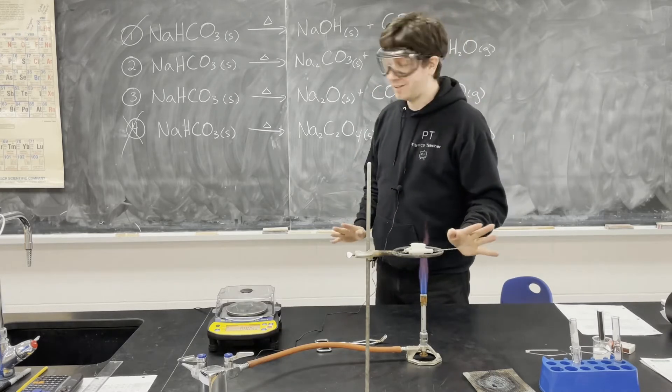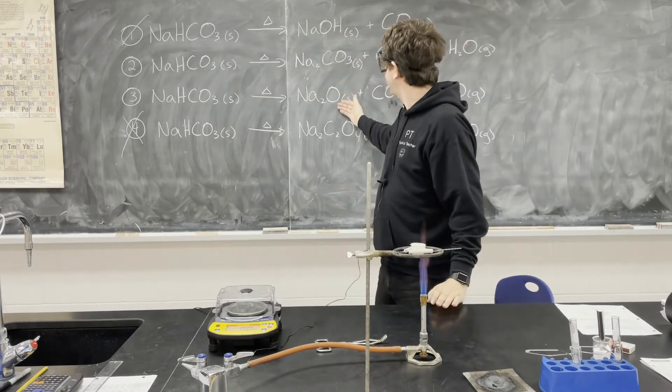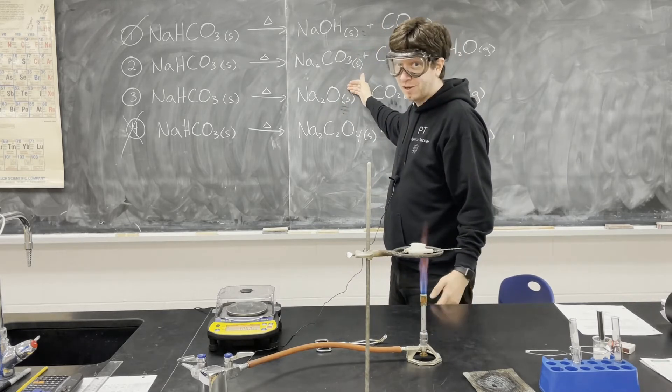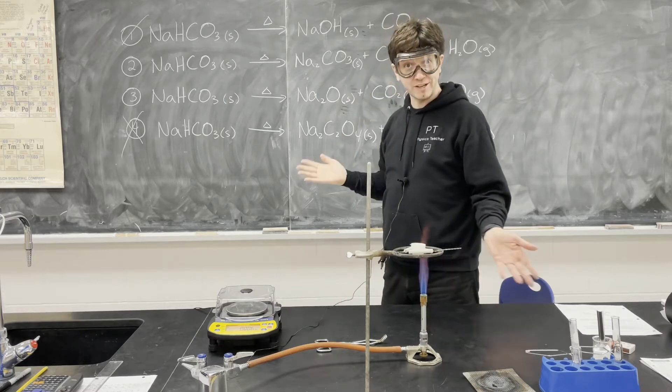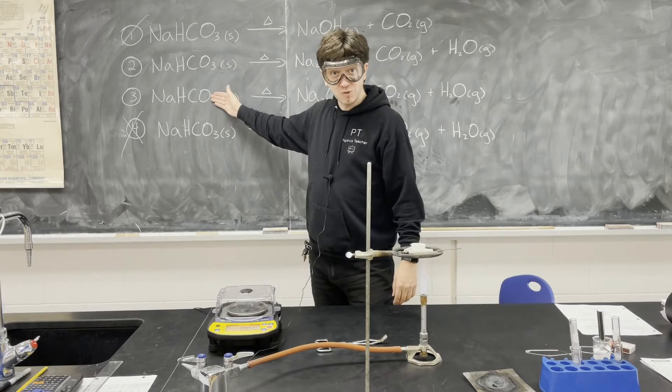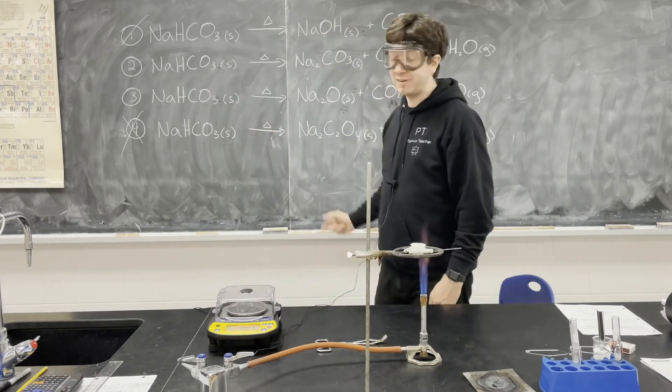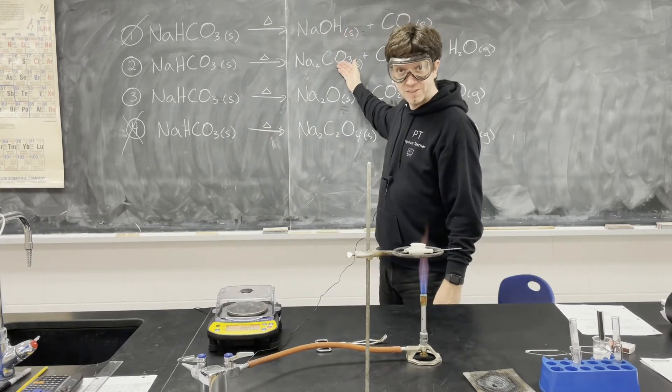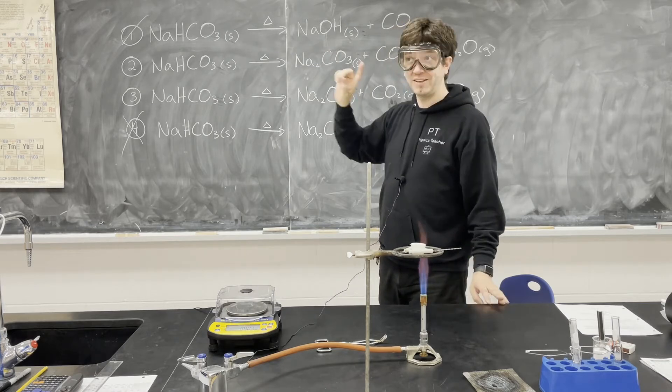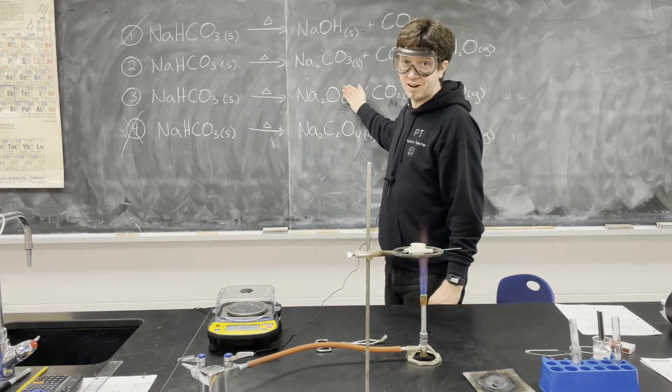So what we're going to do is, for numbers one, two, and three, notice that there's only one solid that forms. So what we can do is, using stoichiometry, as long as we know exactly how much of the reactant we have, we can theoretically calculate how much of this solid product we will get. If you're not sure how to do that, you can check out this tutorial I made here on stoichiometry.